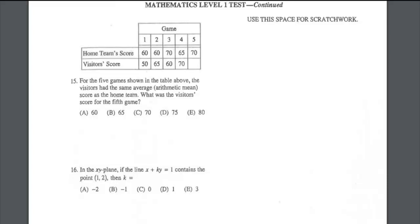In the xy-plane, if the line x plus ky equals 1 contains the point (1, 2), then k equals what? If it contains that point, then the coordinates should satisfy that relation. By substituting x equals 1 and y equals 2, we get 1 plus 2k equals 1, so 2k equals 0, meaning k equals 0. The suitable answer is number C.